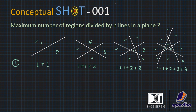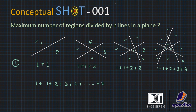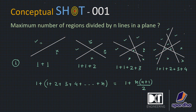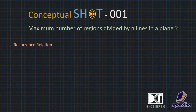So likewise, if we have n lines, the total number of regions will be given by this formula. This is the sum of the first n natural numbers, so we can write it as 1 plus n(n+1)/2. This is one way to deal with this concept. But there is one more concept.